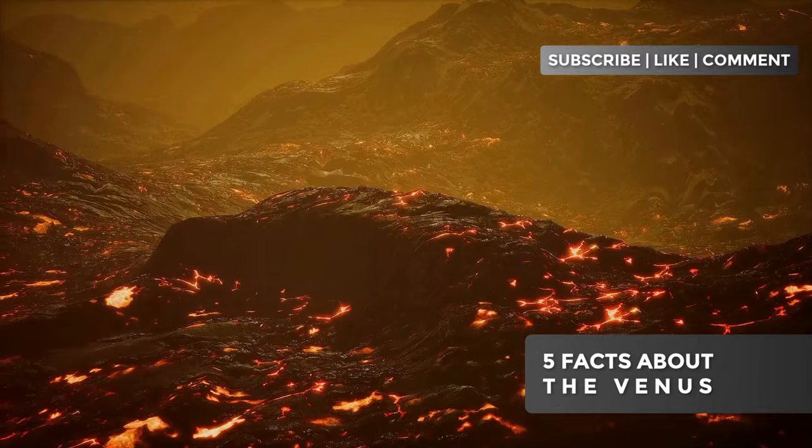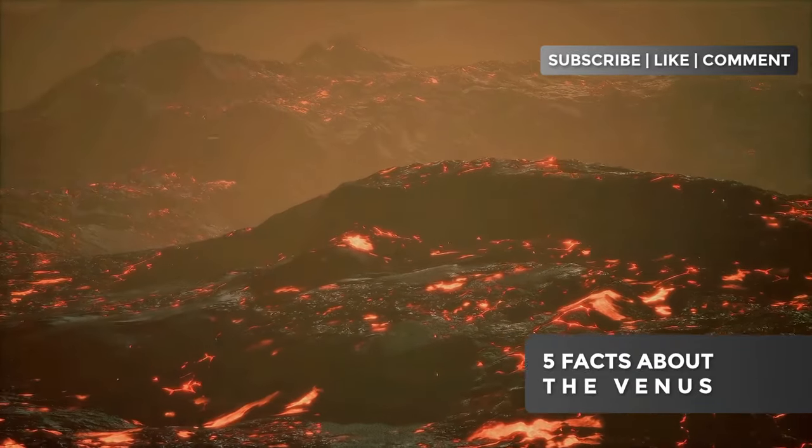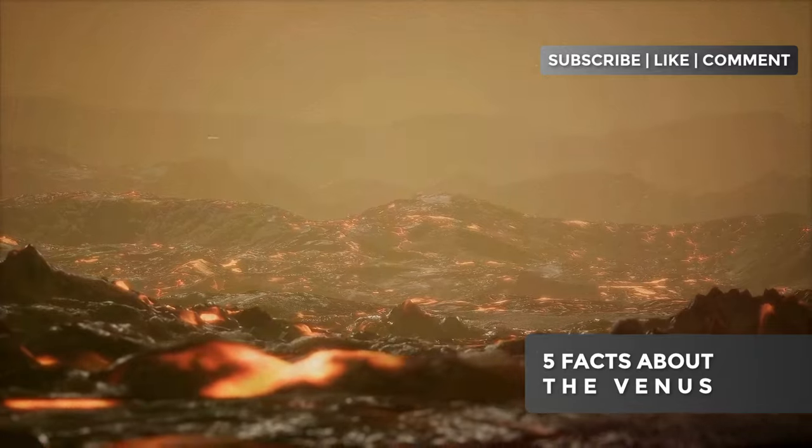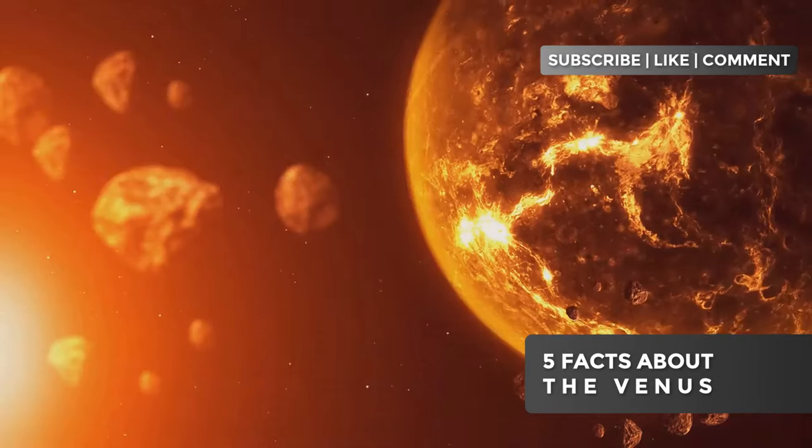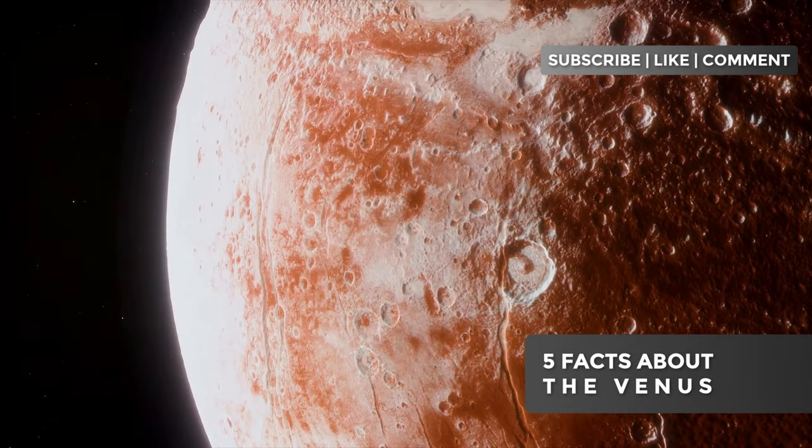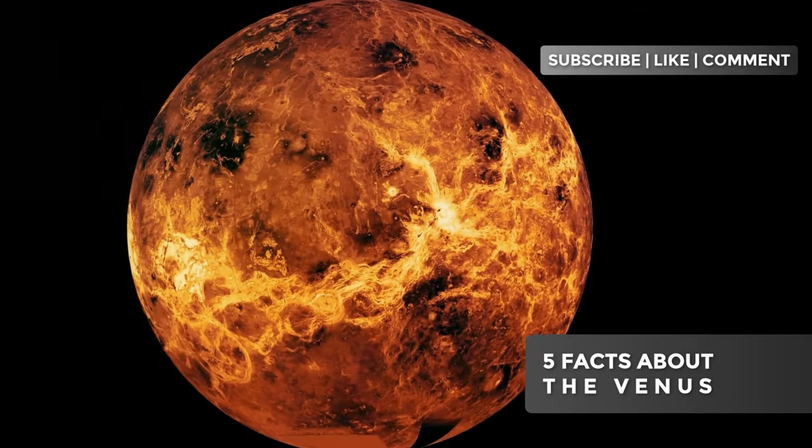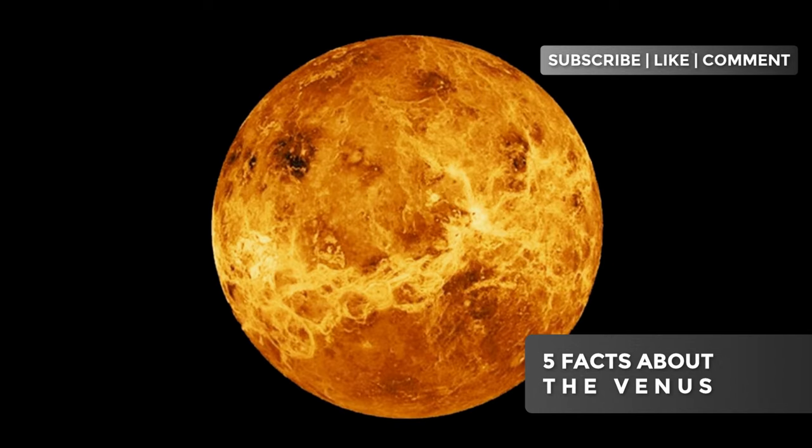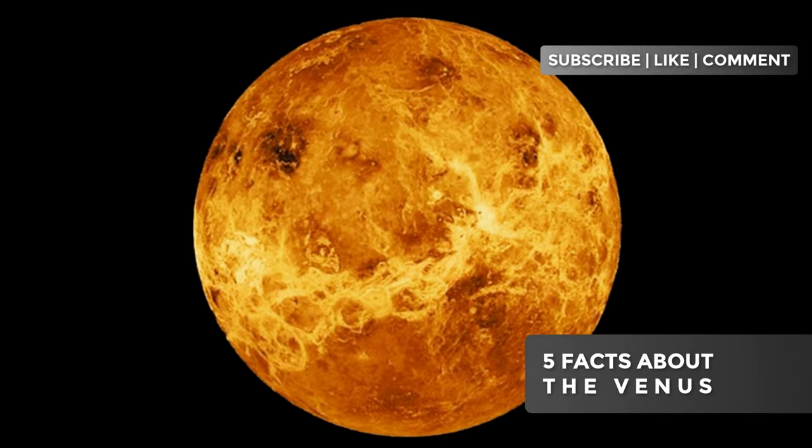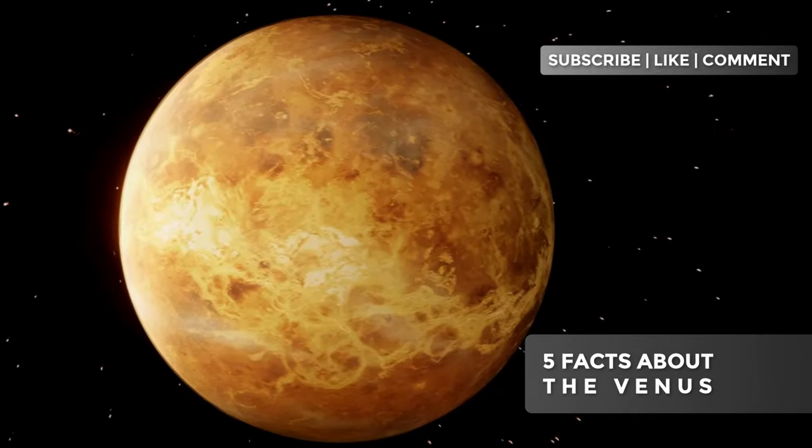Intriguingly, recent evidence suggests that Venus may still be geologically active. Observations of changes in the concentration of sulfur in the planet's upper atmosphere have led some scientists to propose that large volcanic eruptions may occur periodically, releasing gases that alter the atmospheric composition. This ongoing geological activity raises fascinating questions about the planet's interior. Unlike Earth, Venus lacks a significant magnetic field, suggesting that its core may have a different structure or dynamics. Understanding these differences is crucial for our broader understanding of how rocky planets evolve and differentiate over time. Venus's extreme geology not only shapes its surface, but also interacts in complex ways with its dense atmosphere. This interaction between the surface and atmosphere creates a unique planetary system that continues to challenge and inspire planetary scientists worldwide. Now that we've explored Venus's turbulent surface, let's turn to our fifth and final surprising fact, which reveals how this hellish planet holds secrets about Earth's past and future.